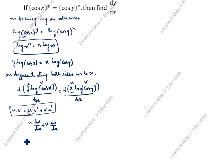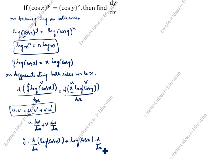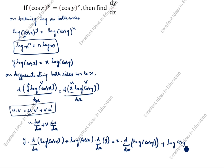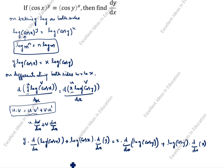First, u is y. So we write y into d by dx of log cos x, plus log cos x into d by dx of y. On the right side, u is x. So x into d by dx of log cos y, plus log cos y into d by dx of x.